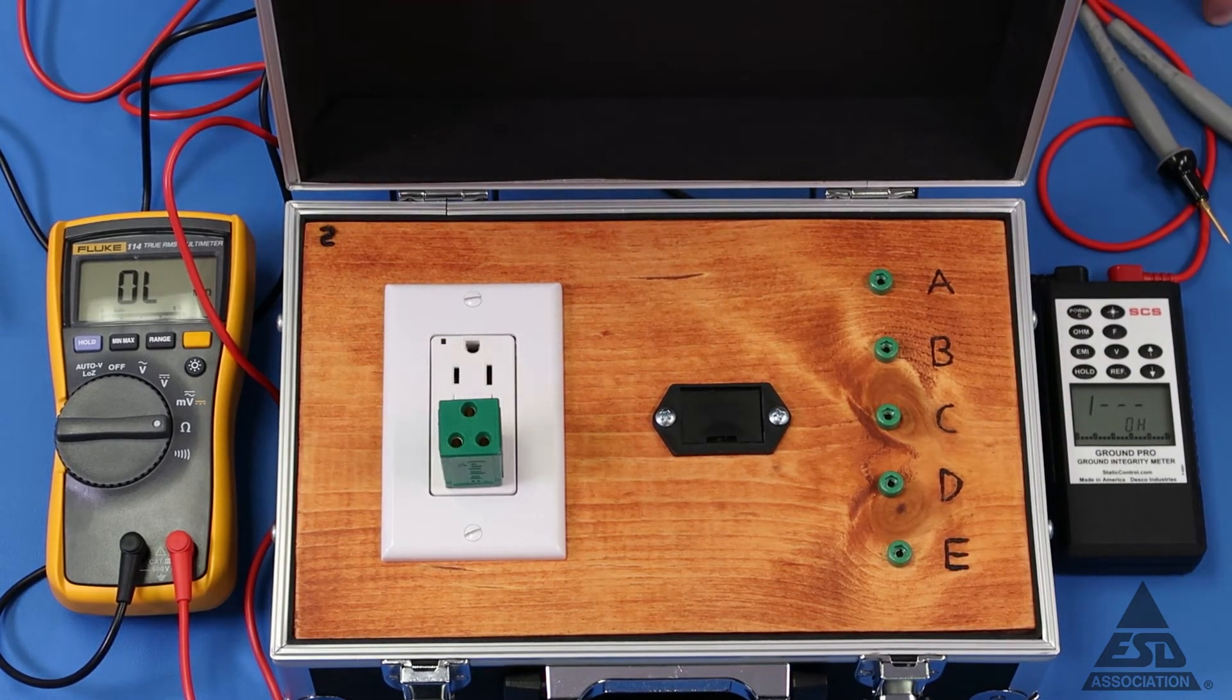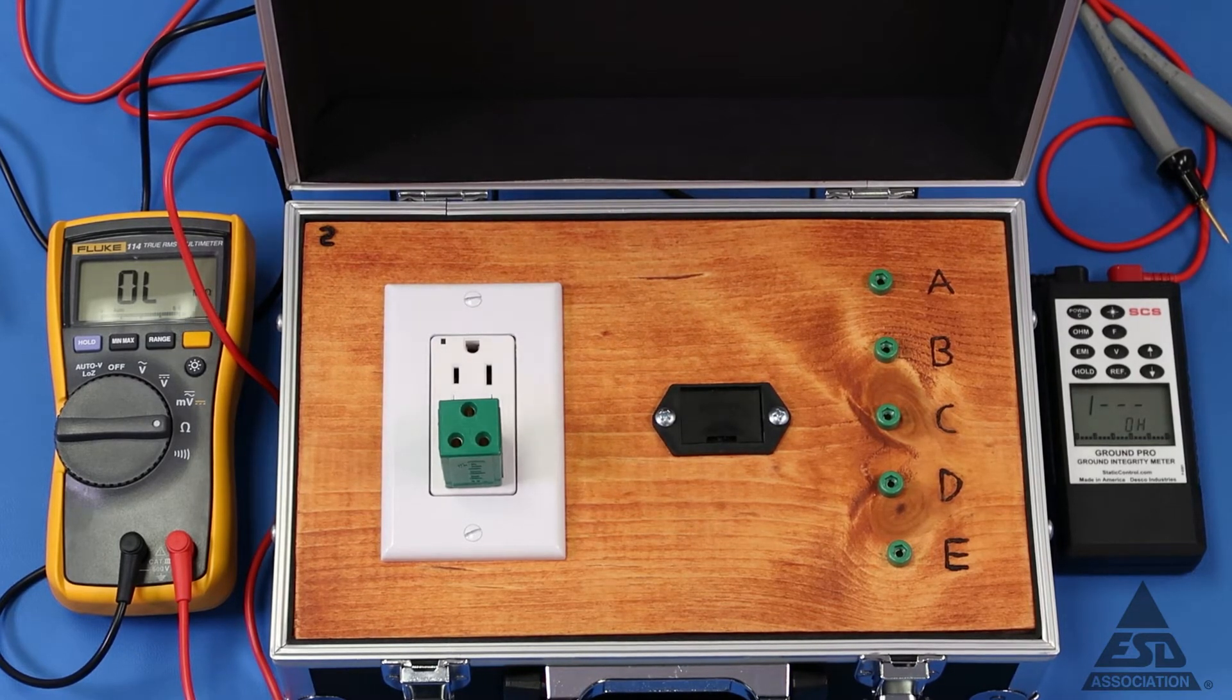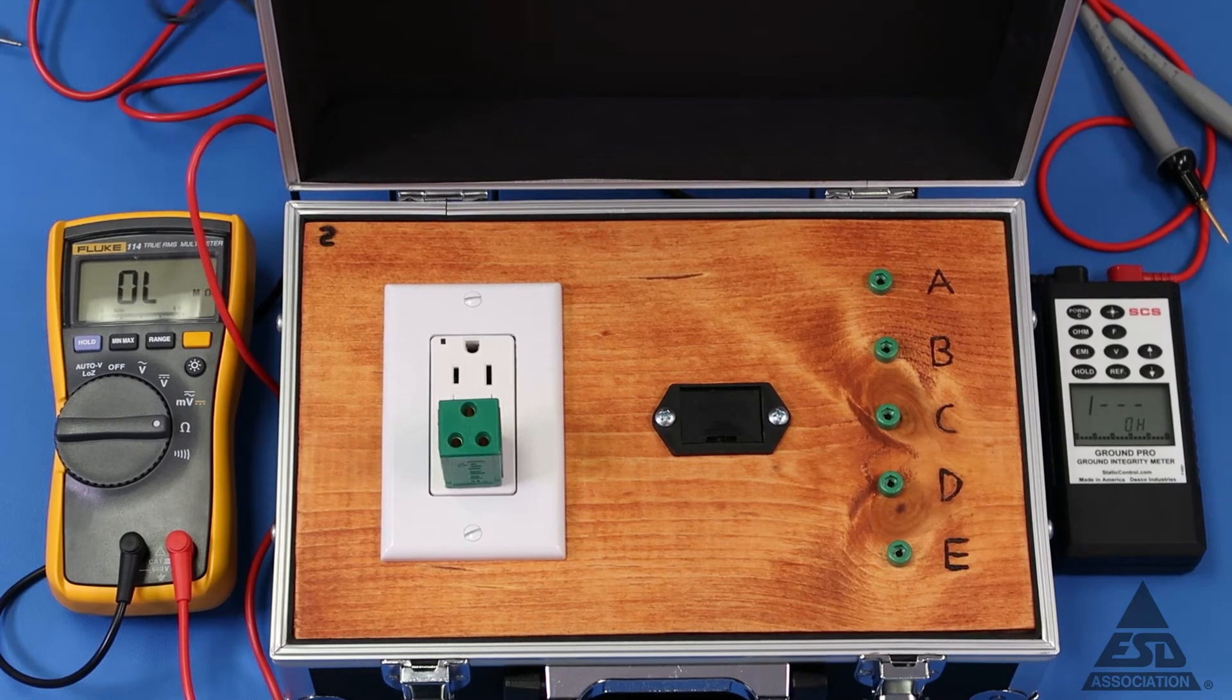And again, 100 ohms in both polarities. What this is actually simulating here is some sort of an oxide condition that's giving us a high resistance reading, higher than we want. Since it's both resistance and not impedance that's making the measurement, they both show the same thing. So let's move on to C.